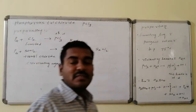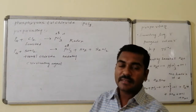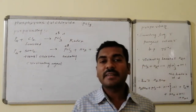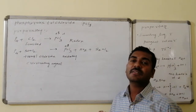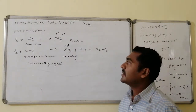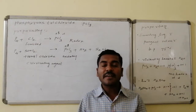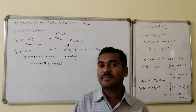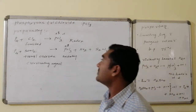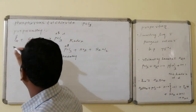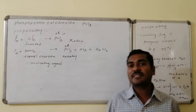Phosphorus trichloride, PCl3: hybridization is sp3, belonging to the AB3E1 category — pyramidal geometry. Preparation: phosphorus on reaction with a limited amount of chlorine gives phosphorus trichloride. Excess amount of chlorine leads to the formation of phosphorus pentachloride. So to avoid formation of phosphorus pentachloride, a limited equivalent amount of chlorine is used. The reaction P + Cl2 → PCl3 is a redox reaction: phosphorus goes from zero to plus 3 oxidation state, and chlorine from zero to minus oxidation state.